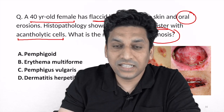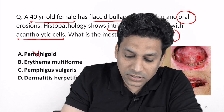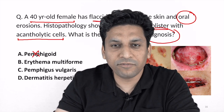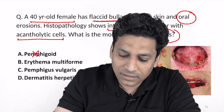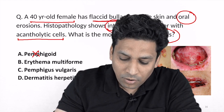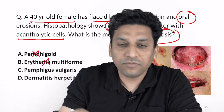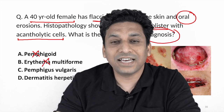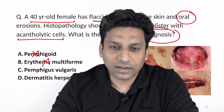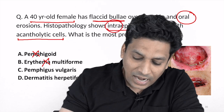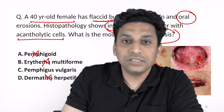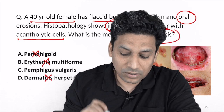The answer here is not bullous pemphigoid, because bullous pemphigoid is subepidermal while here the blisters are intraepidermal. Erythema multiforme, as you may know, shows characteristic target lesions — these are not target lesions. And dermatitis herpetiformis occurs over extensors.